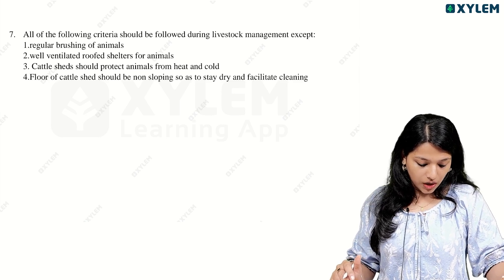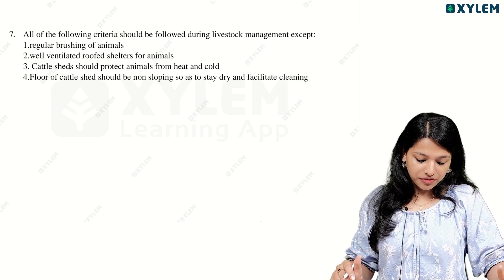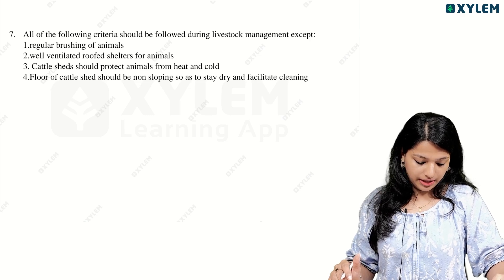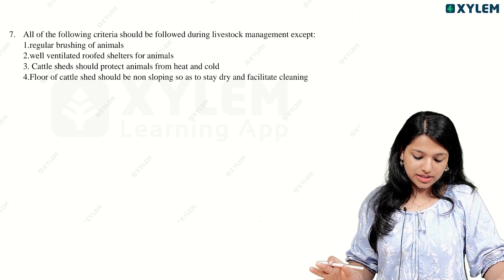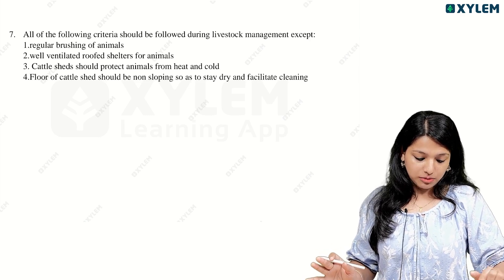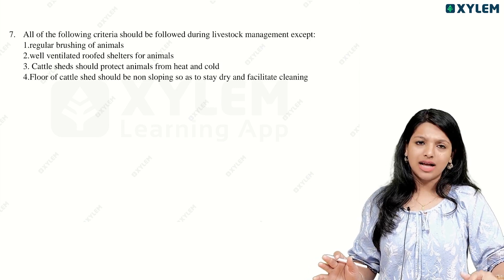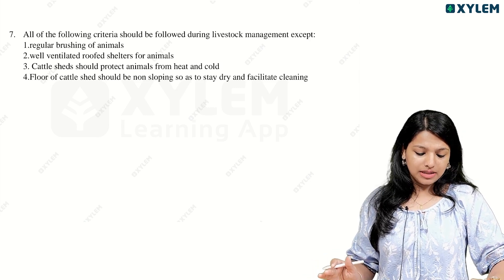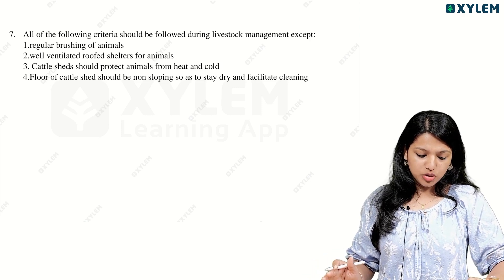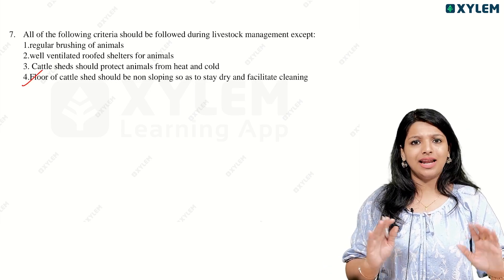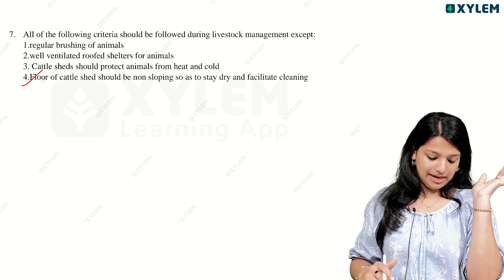Animals from heat and cold. The floor of a cattle shed should be non-sloping so as to stay dry and facilitate cleaning. All of the following criteria should be followed in livestock management except this one. If the third option is correct, then we have to choose the fourth option. The other option should be sure to do it.